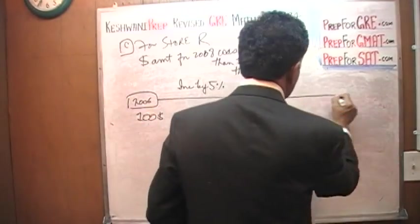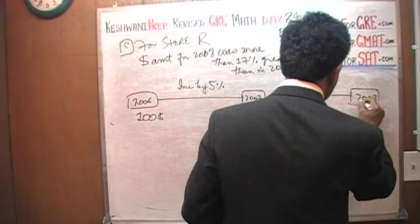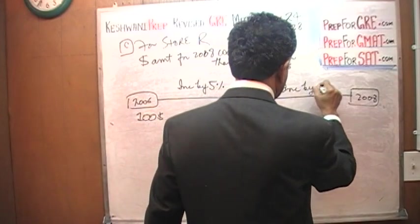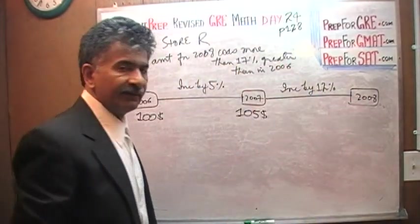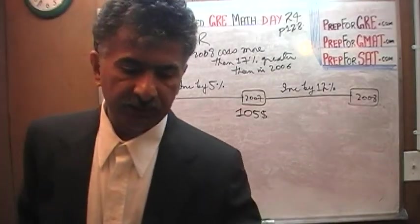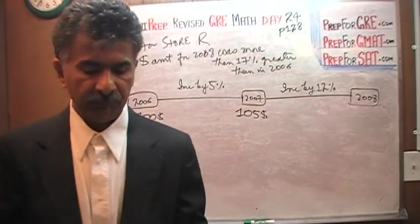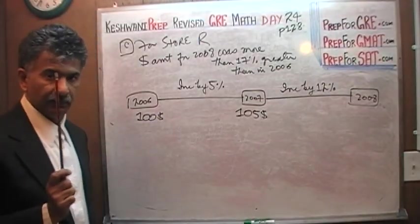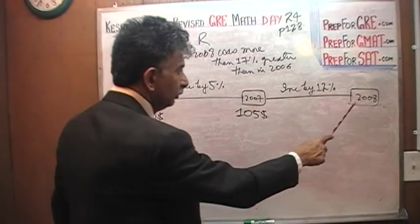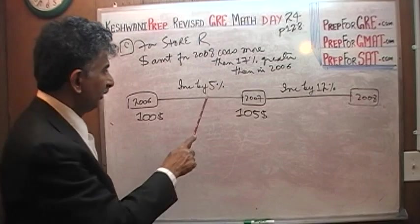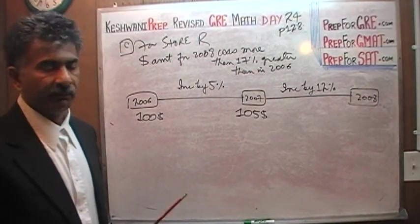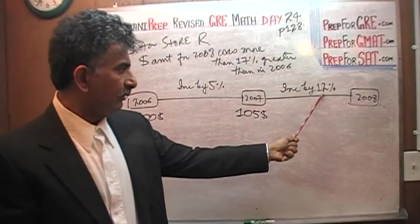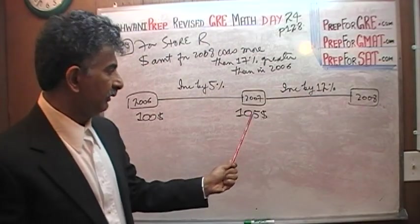And then what happens from 2007 to 2008? We are told that it goes up by 12%. It is the exact same logic, exact same argument that we made in the statement B. It is the same argument that we are going to make here, except for reverse reason. Here, the final increase, the final increase from 2006 to 2008 is not a simple matter of adding 5% and 12%. It is not a simple matter of adding the two percentages. Because here, the 12% increase that you see there is not a 12% increase of the original amount. It is a 12% of 105.